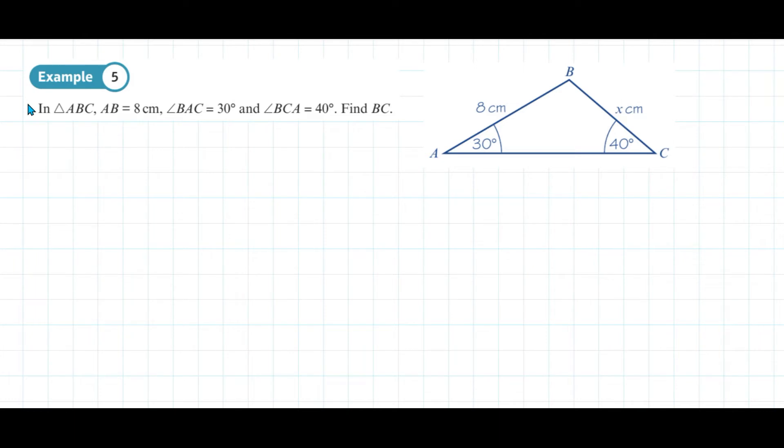This is example 5 from page 180 of the year 1 textbook. In triangle ABC, AB is 8, angle BAC is 30 degrees, and angle BCA is 40 degrees.